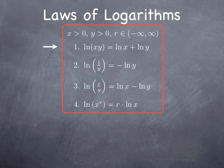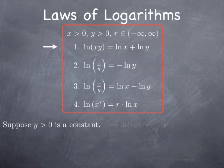The first law states that the log of a product is the sum of the logs, assuming both x and y are positive. To prove this, suppose y is a positive constant and consider the function ln(xy). If we differentiate this function, we have a composite log, so we use the chain rule. We get the derivative of ln at xy, which is 1 over xy, multiplied by the derivative of the inside function xy with respect to x.